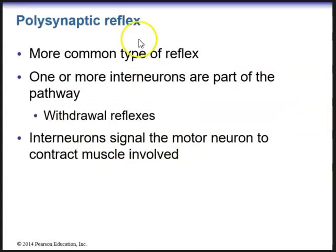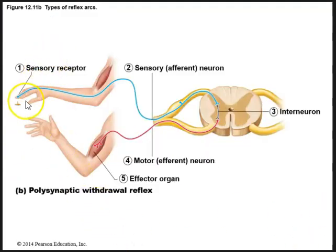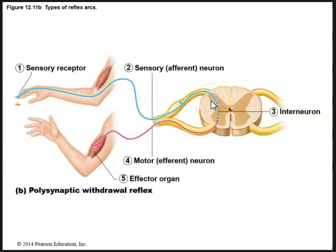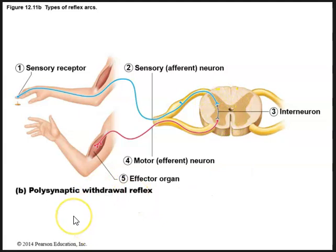A polysynaptic reflex, as its name implies, has more than one synapse. This is a more common type of reflex in which one or more interneurons are part of the pathway. An example is a withdrawal reflex — like when your hand feels something hot or sharp. The interneurons signal the motor neuron to contract the muscle involved. Here we see a finger touching a sharp tack, with the signal going from the sensory receptor up the sensory afferent neuron to the interneuron within the CNS, then down to the effector organ — with two synapses in the integration center.